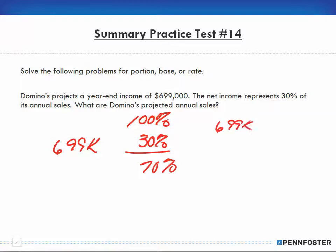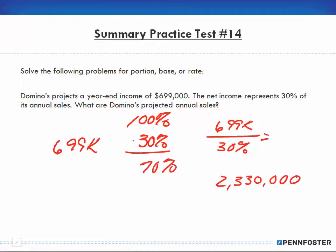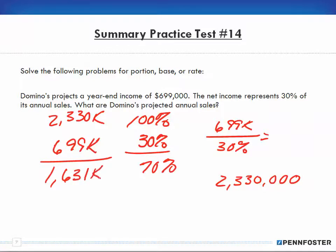The question asks: what are Domino's projected annual sales? To find that, I take $699,000 and divide by 30%, which gives me $2,330,000. Subtracting $699,000 from $2,330,000 leaves $1,631,000. As a double-check, I could take $1,631,000 and divide by 70%, and I'll get the same total.